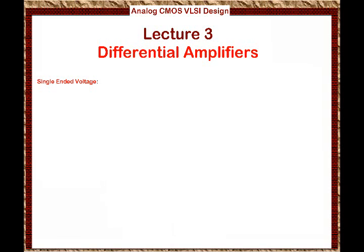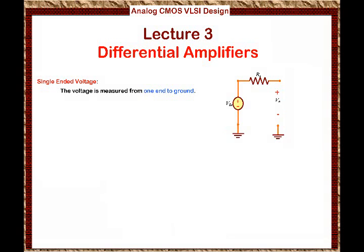Basically, in single-ended voltage, the voltage is measured from one end or one node to ground. So if you look at this graph, for example, we have a voltage source connected to a resistor and we are interested in measuring the voltage at this node to ground. This is a single-ended voltage — you measure the voltage from one node to ground.